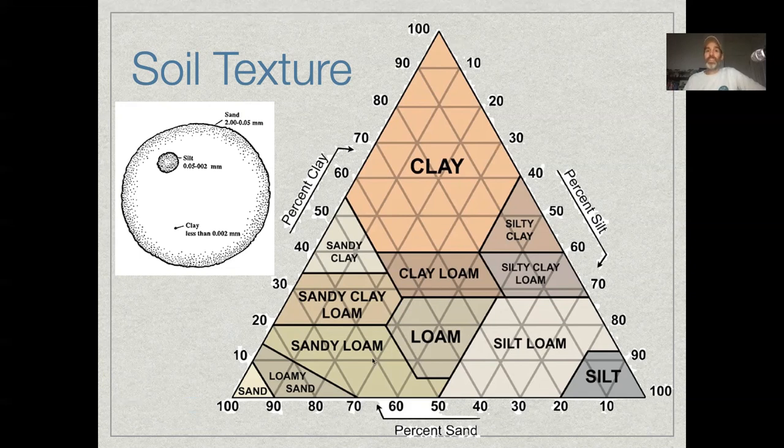So since it sums to 100%, you can express any particular texture class in a sum to one constraint, so we can plot them on a triangle. And so the percent clay is represented by these horizontal lines. So like up here, I'm at a 70% clay, 60% clay, 50% clay going across this way.